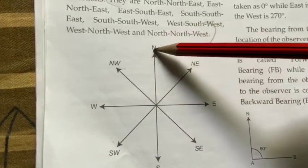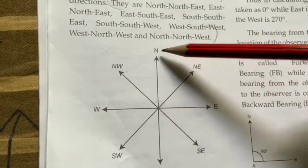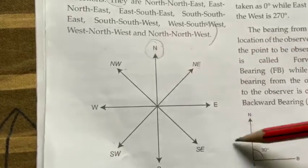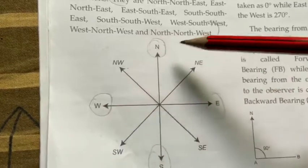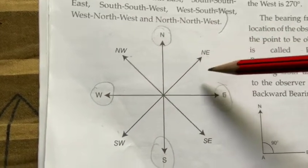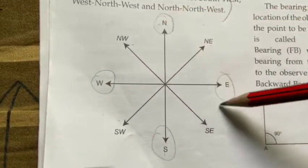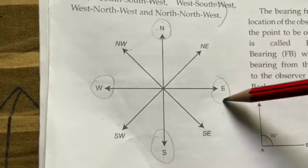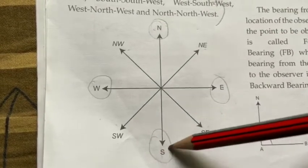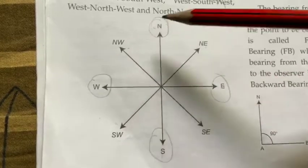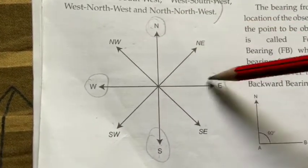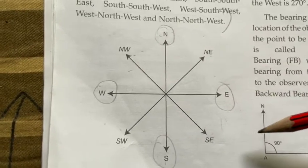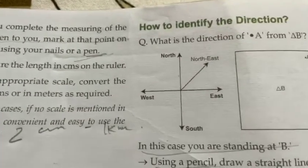So basically, the major directions are called North, East, South, and West. The intermediate directions are: North and East gives North-East; East and South gives South-East; South and West gives South-West; and North and West gives North-West. Now let us understand how to identify direction.